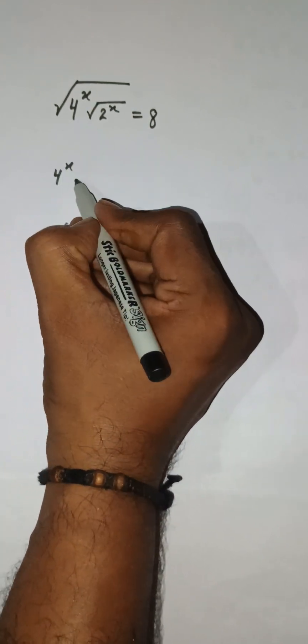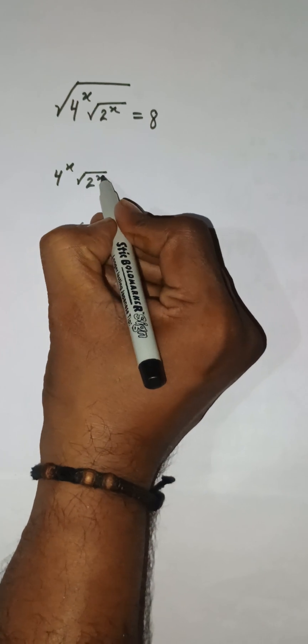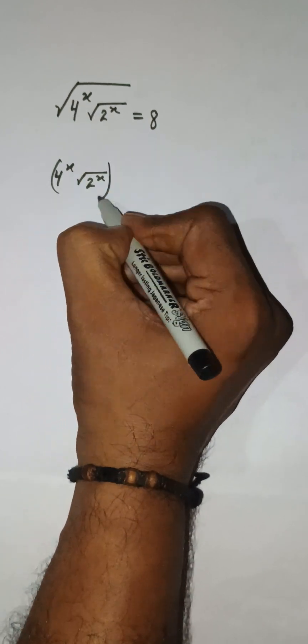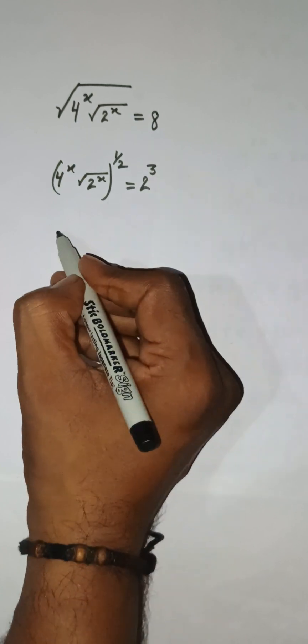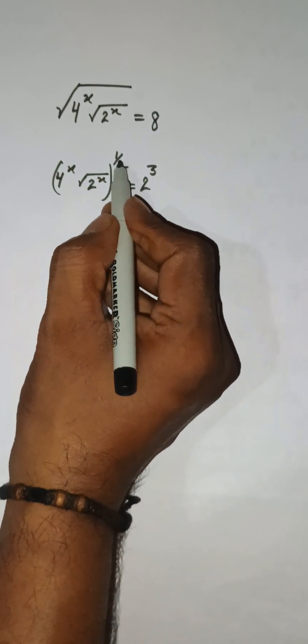Here we have 4 to the power x times the square root of 2 to the power x. This square root can be written as power 1 by 2, and this 8 can be written as 2 to the power 3. Now we need to remove this square root.